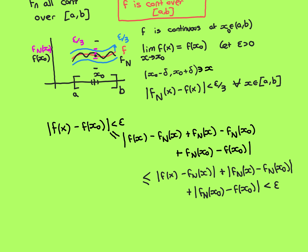So that is how I established that for this delta interval found using the continuity of f_N, any point taken in that delta interval will be mapped into the epsilon interval around f of x0. Therefore I have found a delta interval satisfying the continuity criterion for f at x0. I can therefore conclude that the limit as x approaches x0 of f of x equals f of x0, and therefore f is continuous at x0.